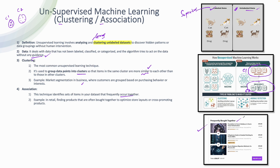This is association. A perfect retail example is finding products that are often bought together to optimize store layout or cross-promote products. When you purchase a course, it automatically associates related courses — for instance, it shows Oracle Cloud or OCI-related courses together, not an unrelated cybersecurity course. So this is association.